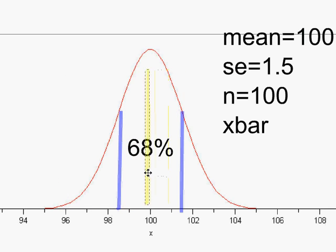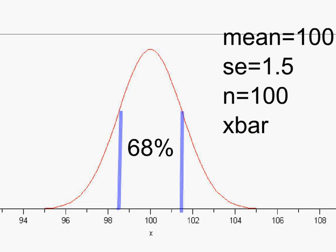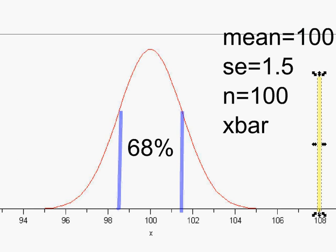If the sample mean is within one standard error, I wouldn't suspect anything strange is going on — the population mean could still be 100. But what if the sample mean was way over at 108? It's also possible to have a sample mean two standard errors away, so plus or minus two standard errors takes us down to 97 and up to 103.